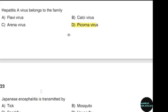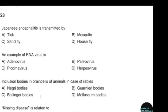Japanese encephalitis is transmitted by — correct answer option B: Mosquito. An example of an RNA virus is — correct answer option C: Picornavirus.